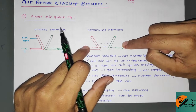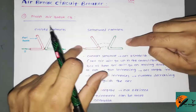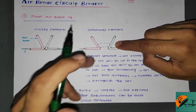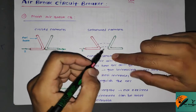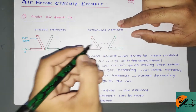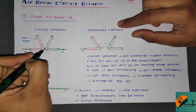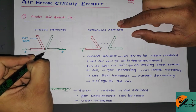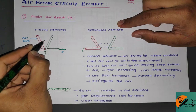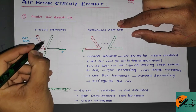When you start separating the contacts under a fault condition, an arc is produced. The arc which is produced — you can see that here the magnetization force acts and the arc in the atmosphere will begin to vanish.